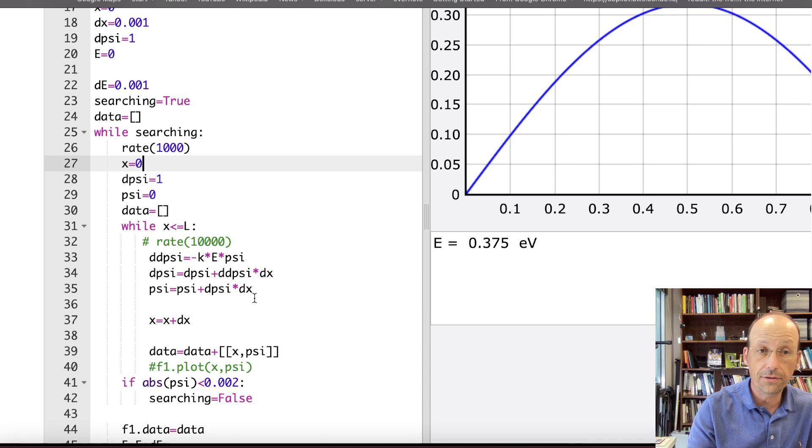And then I add it to this data. And then I'm going to do it until x gets to L. And during that time, here's that differential equation. Calculate the psi double dot. I'm going to change this to E minus V. I don't know why they use V. Shouldn't it be U?